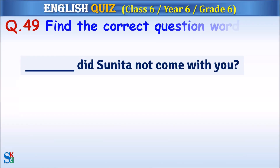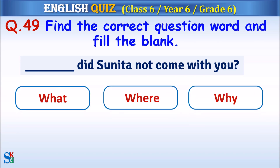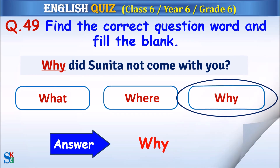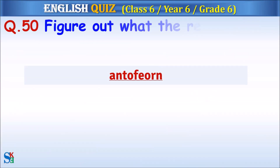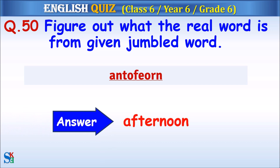Question 49: Find the correct question word and fill in the blank. The answer is 'why.' Question 50: Figure out what the real word is from the given jumbled word. The answer is 'afternoon.'